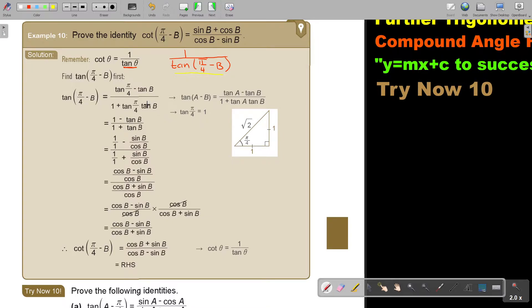And now I know that tan pi over 4 is 1. So it's 1 times tan β, so it's just tan β. Now I go to sin and cos. So I break 1 over 1. This is sin β over cos β. This is 1 over 1 plus sin β over cos β.